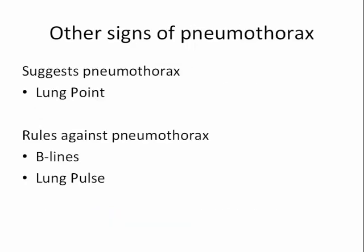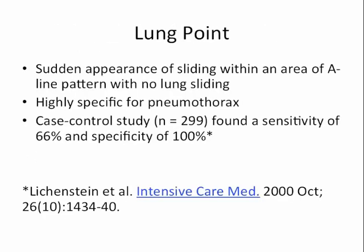In terms of other signs for pneumothorax: if the patient has a lung point, this would suggest pneumothorax, whereas the presence of B lines or a lung pulse would rule against the patient having a pneumothorax. The lung point is basically a sudden appearance of an area of normal sliding lung in an area where there was no sliding lung before. This sign was found to be highly specific for pneumothorax — the original case-control study found a specificity of 100%.